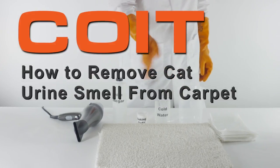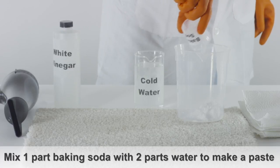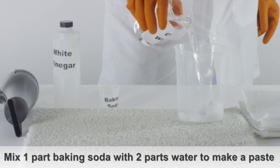How to remove cat urine smell from carpet. Using one part baking soda and two parts water, combine the two ingredients into a small bowl to make a paste.